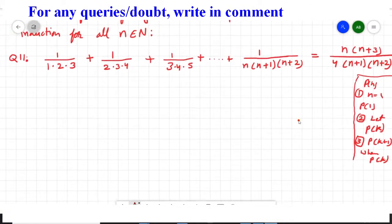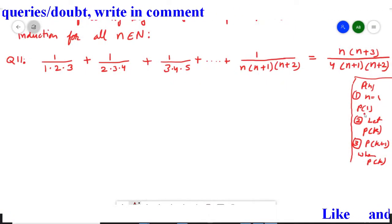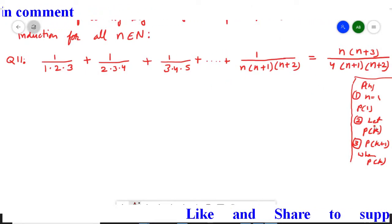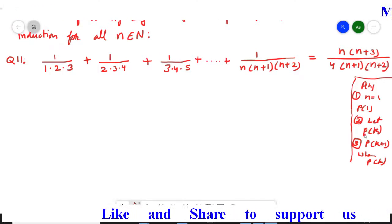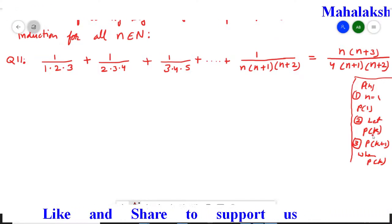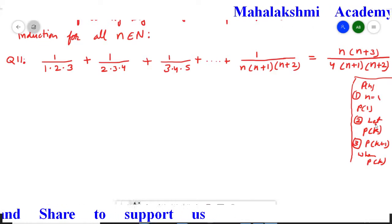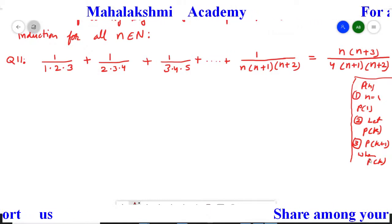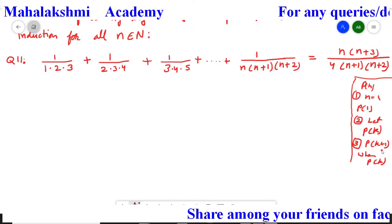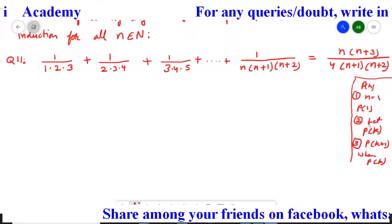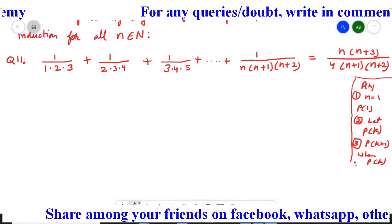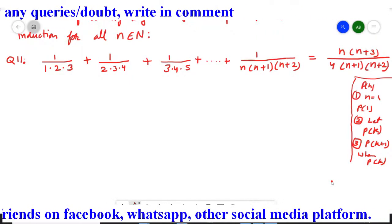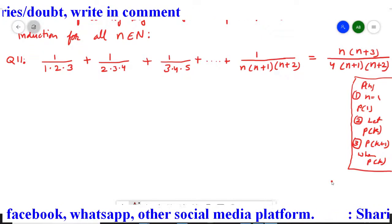The three steps are: first step is for n equal to 1, we have to prove the mathematical statement is true. In the second step, we assume that for n equal to k the given statement is true — in second step you do not have to prove anything, you only assume Pk is true. Then in the third step, with the help of Pk, we have to prove Pk+1 is also true. If we satisfy these three conditions, the statement is true for all n belonging to the natural numbers.